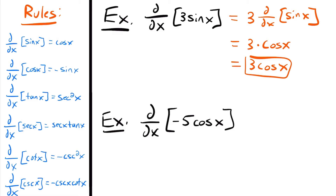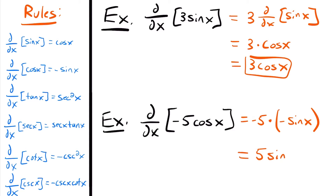Going forward I won't show that step explicitly, but when you have a constant multiplied by a trig function, just multiply it by the derivative of that trig function. For negative 5 times cosine x, we get negative 5 times the derivative of cosine x, which is negative sine x. We have two negatives — they cancel — giving us positive 5 sine x.